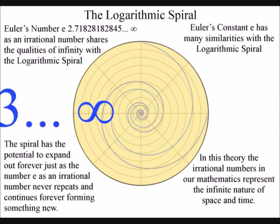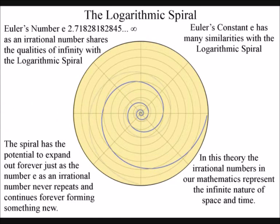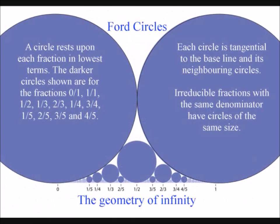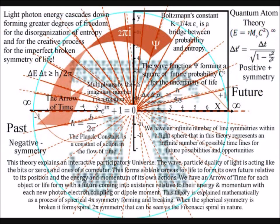In this theory, the irrational numbers in our mathematics represents the infinite nature of space and time. This is why, when we consider something static, like the fixed ratio of a circle to its diameter,